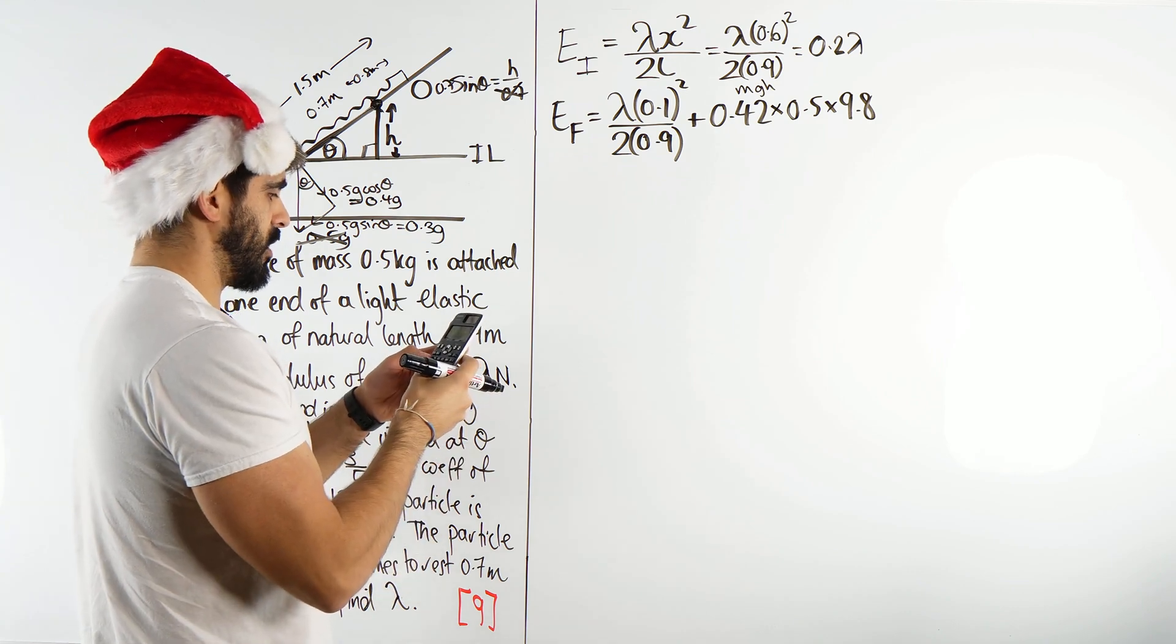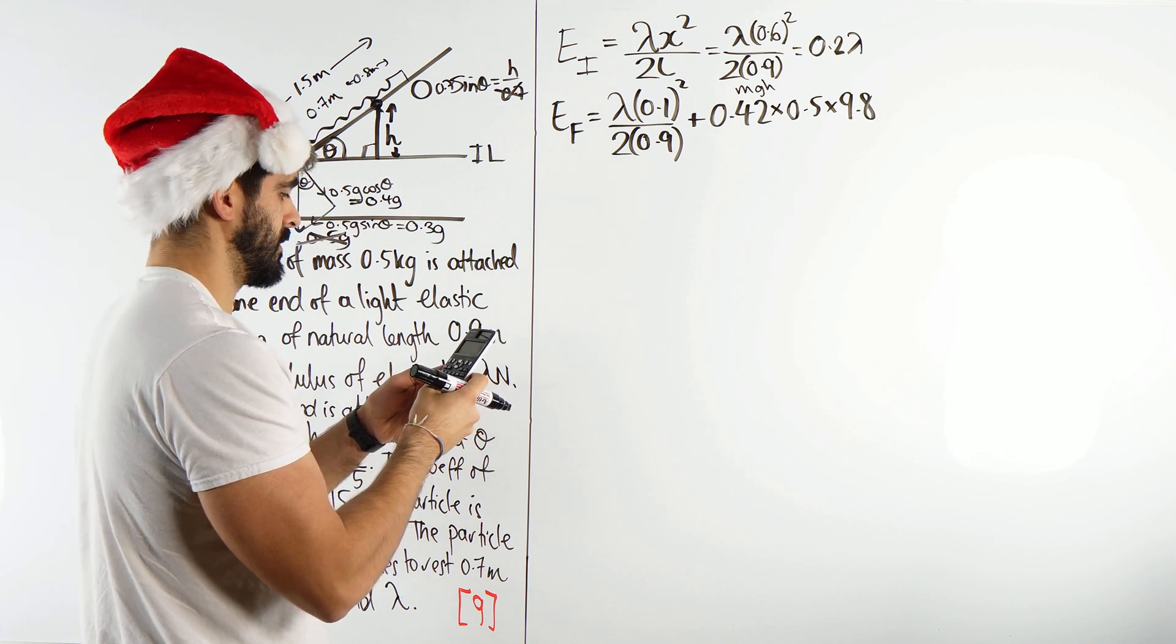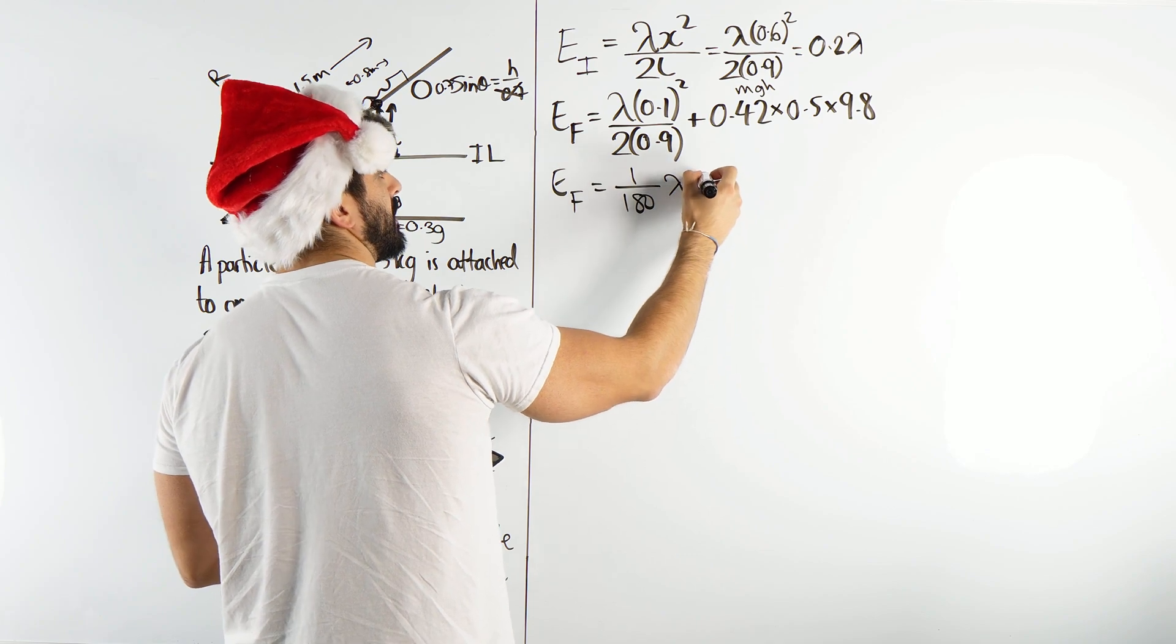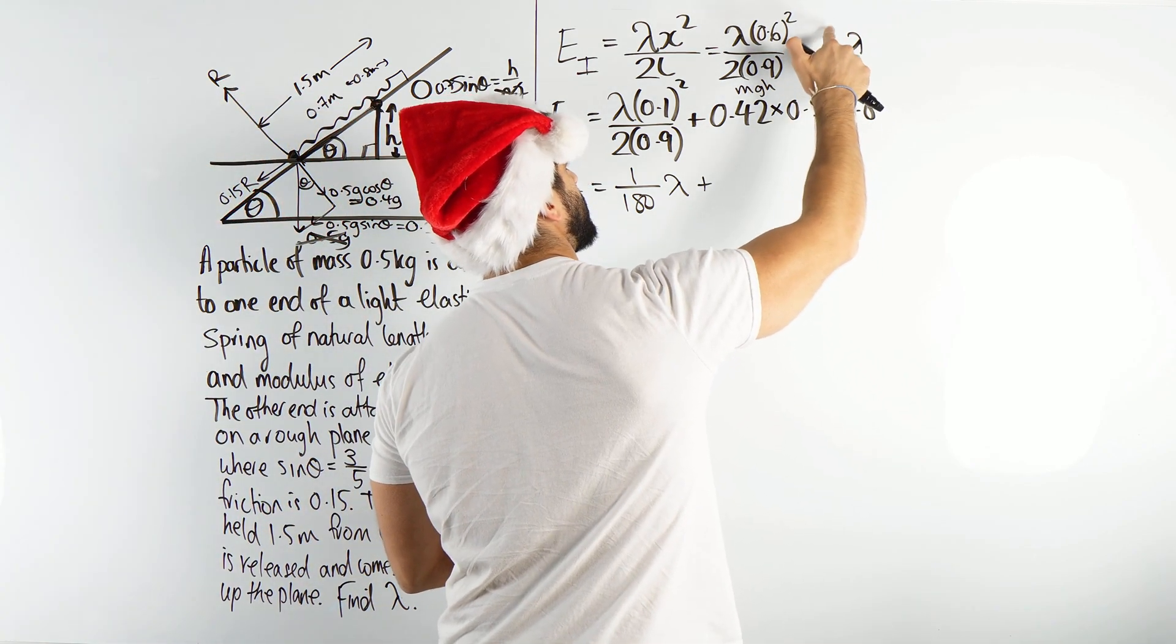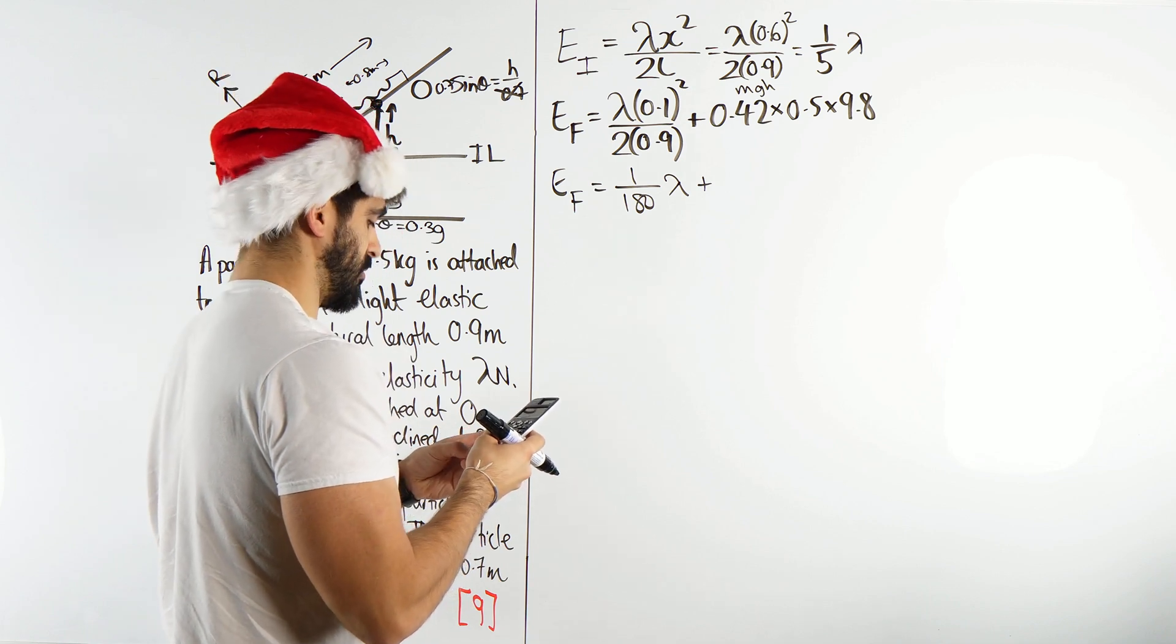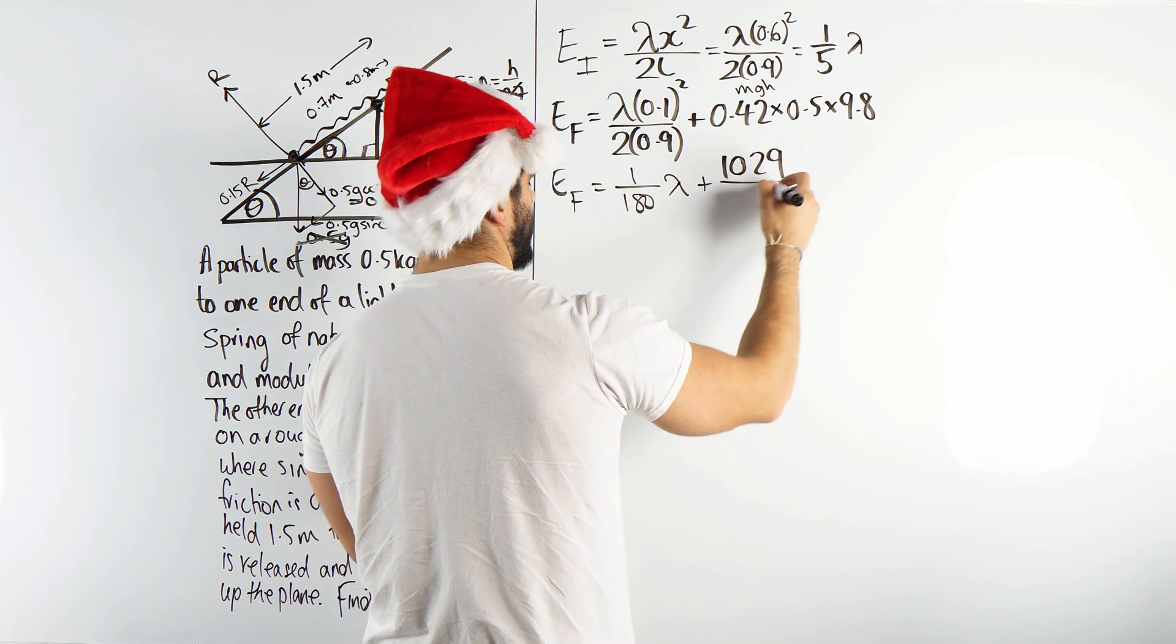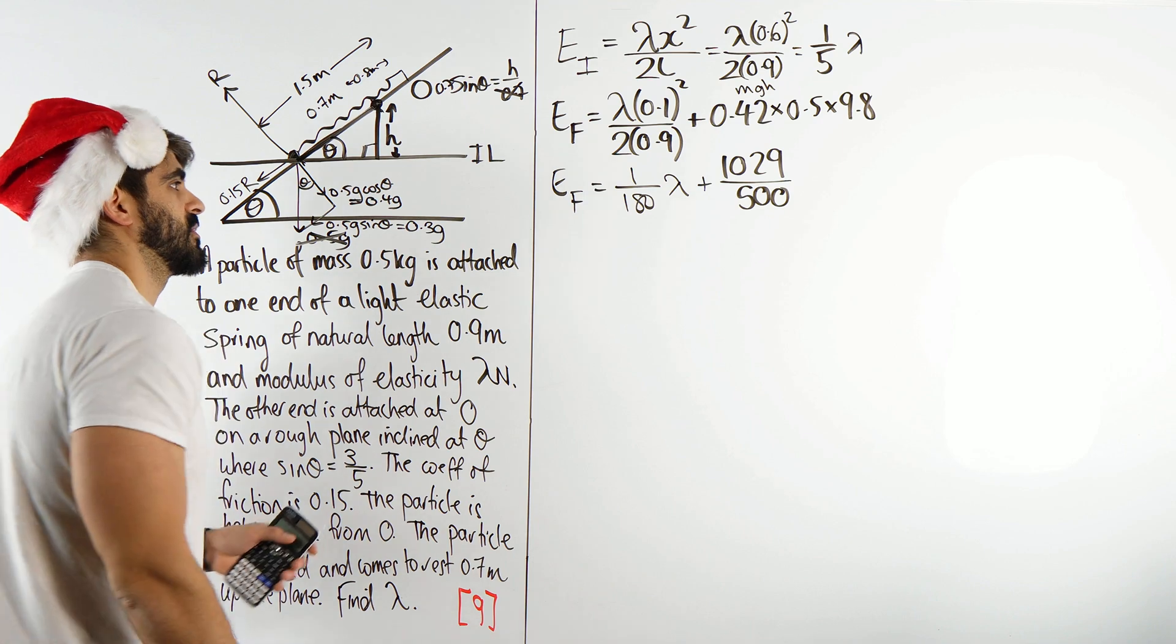I haven't even written down what the gravitational potential formula is. It's mgh. So I've actually written the h part. I'm going to write times the mass, which is 0.5, times g. G we use 9.8, not physics where you would use 9.81. So what have we got? We've got 0.1 squared over two lots of 0.9, that's 1 over 180 lambda plus 0.42 times 0.5 times 9.8, which is 1029 over 500.